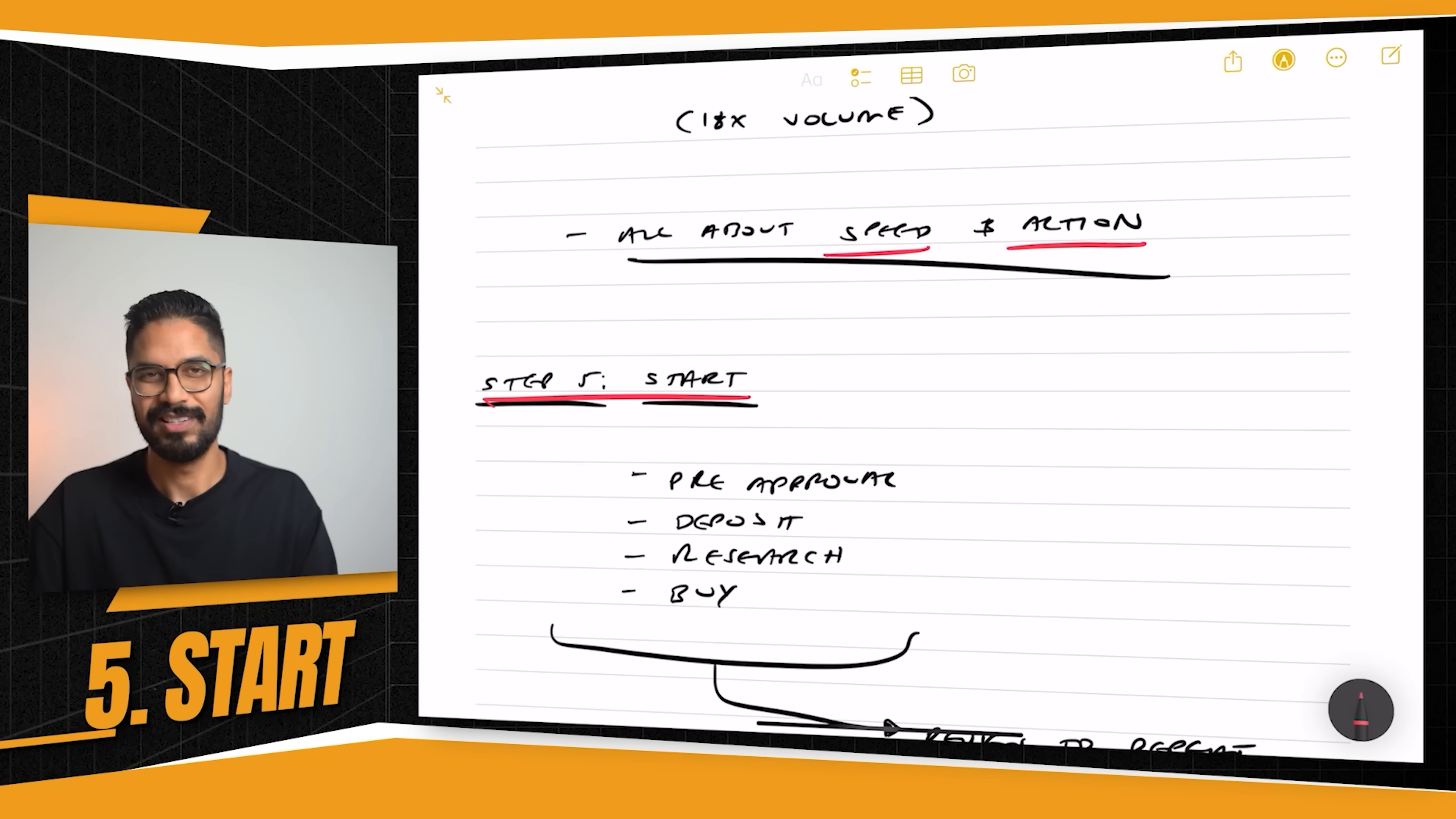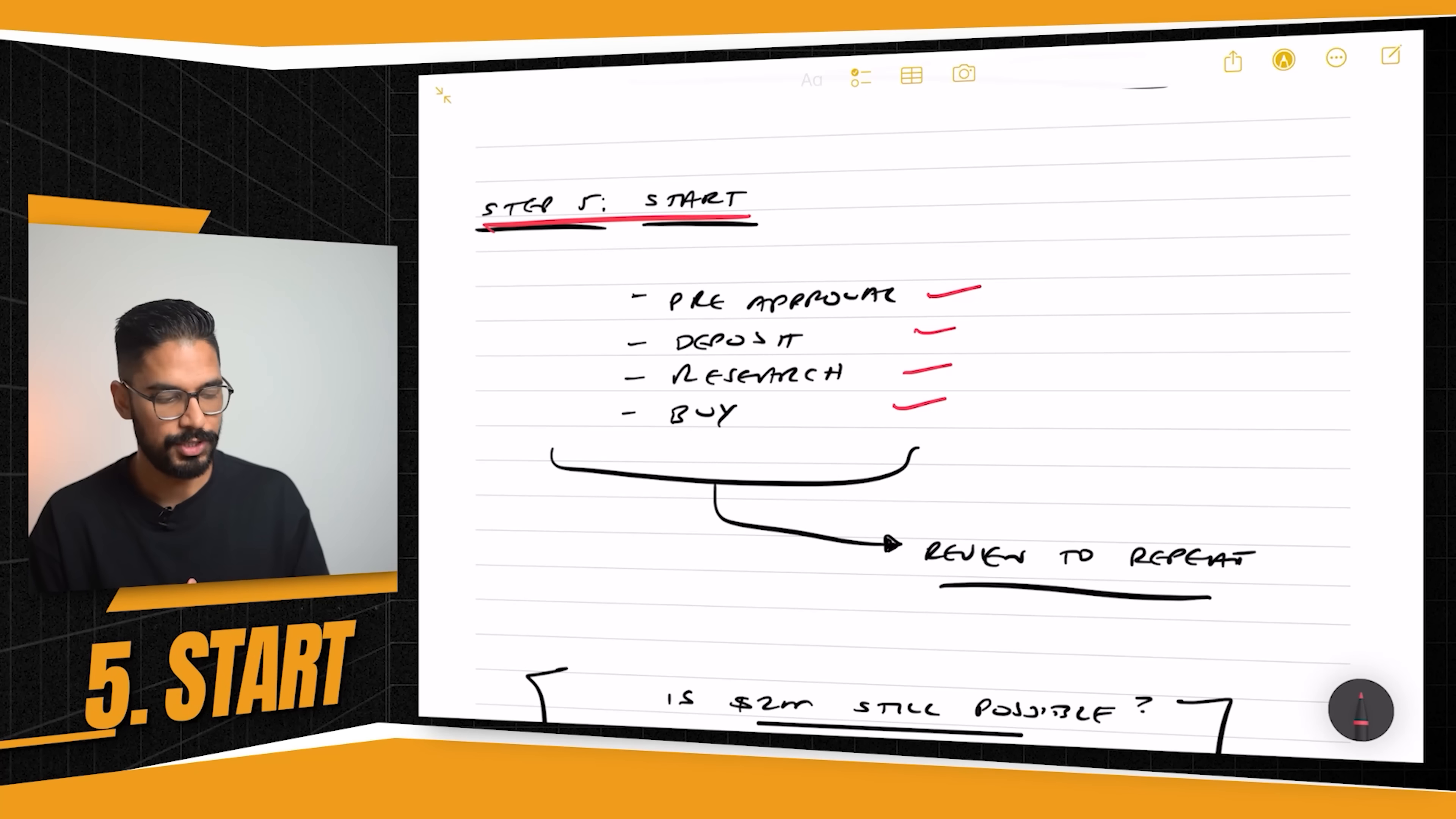And now step five is just starting. You have to get your pre-approval in place. You need to know you've got your deposit, you've done your research, and now it just comes down to executing and buying the right property. Now, as you go through this process, you're going to learn things. You're going to understand that there's certain things that actually move the needle in the right direction.